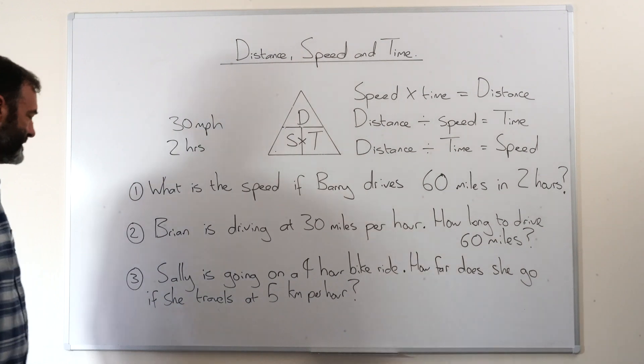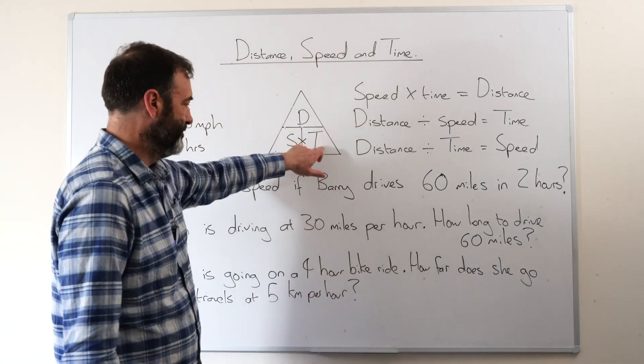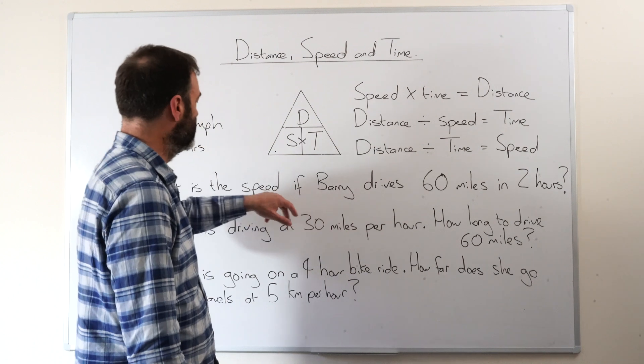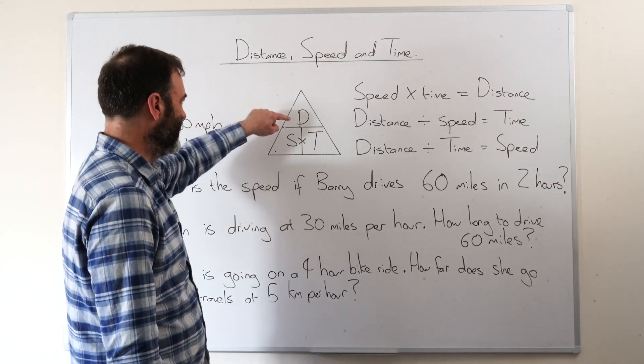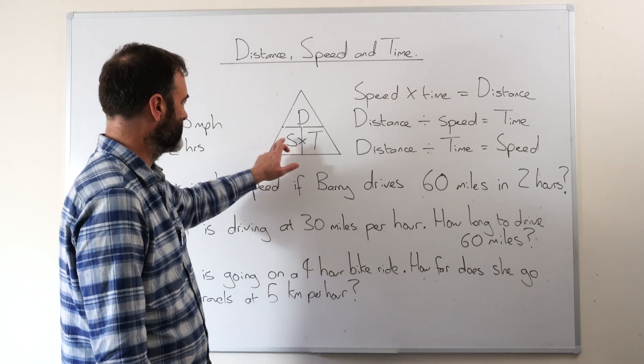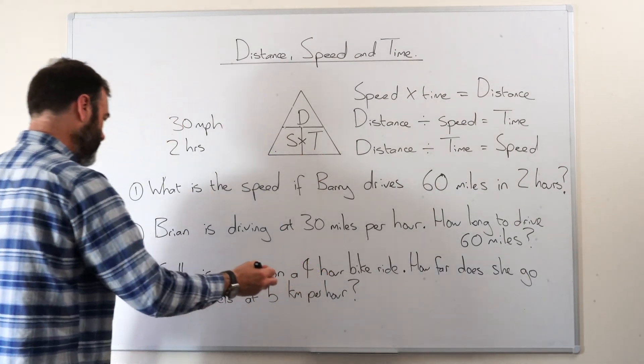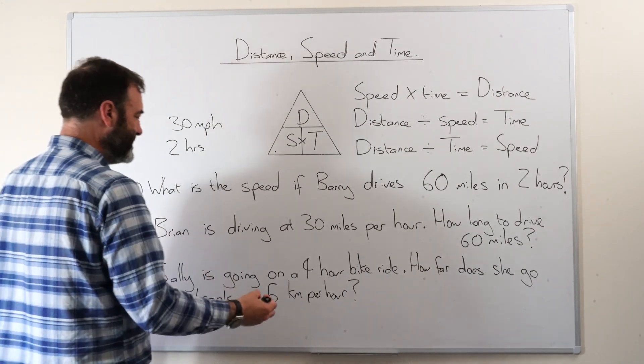And then last but not least, Sally is going on a 4 hour bike ride. How far does she go? We need distance if she travels at 5 km per hour. So we've got speed. So now we know we've got to multiply these two. So 4 times 5 is 20.